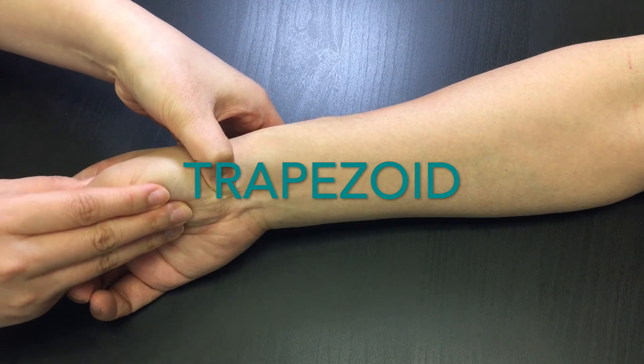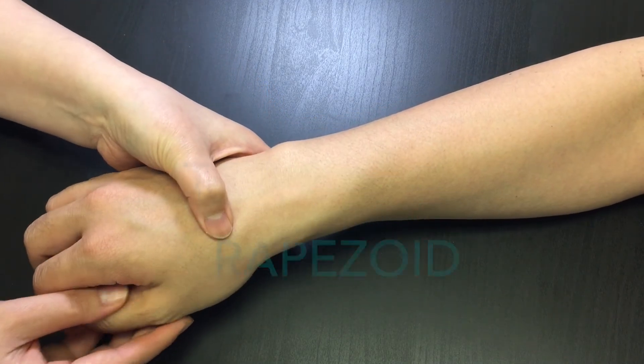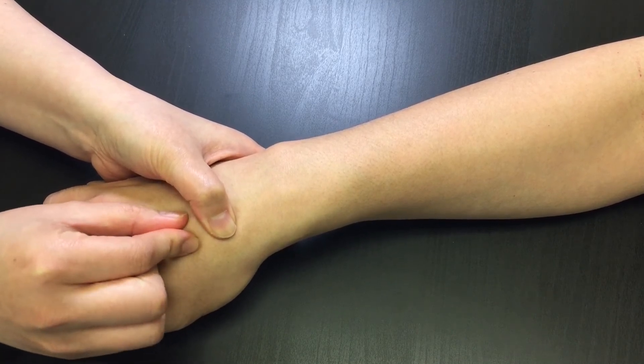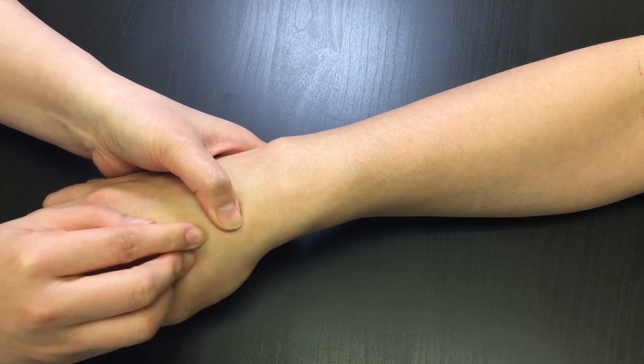Trapezoid is directly next to trapezium and proximal to the base of the second metacarpal bone. Palpate along the shaft of the second metacarpal bone and locate the base of the bone.